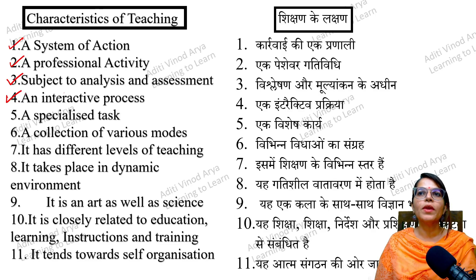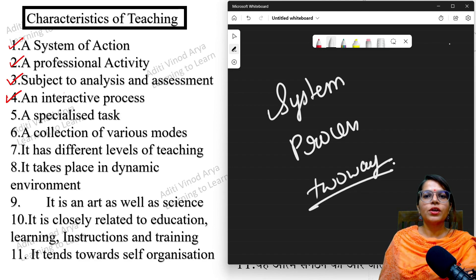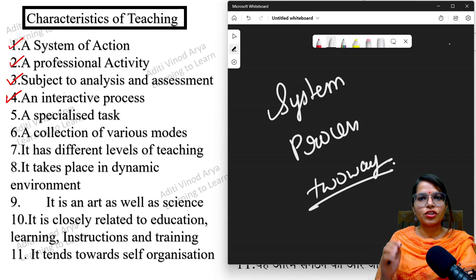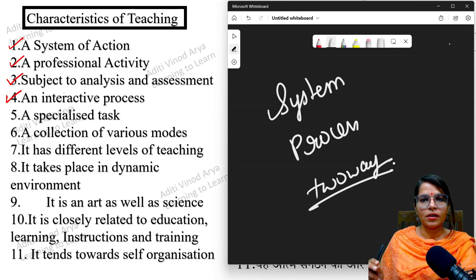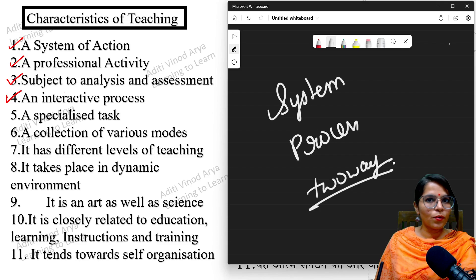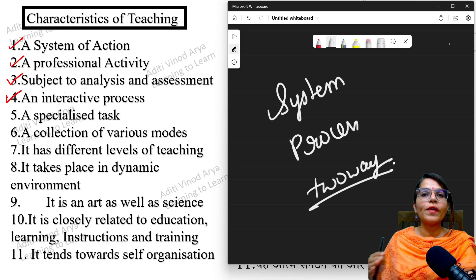The next characteristic is that teaching is an interactive process. It is a two-way process. The child is not a passive listener but is treated as an active learner who tries to understand what the teacher is saying as well as responds to it. So teaching is a two-way communication process.